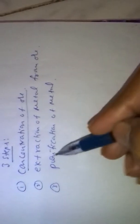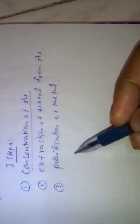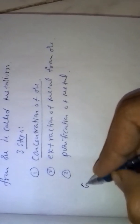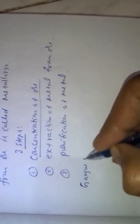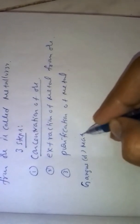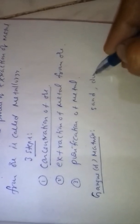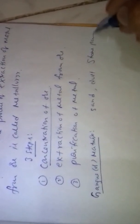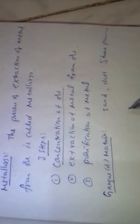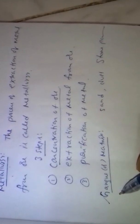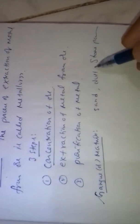Those earthy materials associated with the ore are called gangue or matrix — earthy materials like sand, dust, and stone particles which are associated with ore are called gangue or matrix.